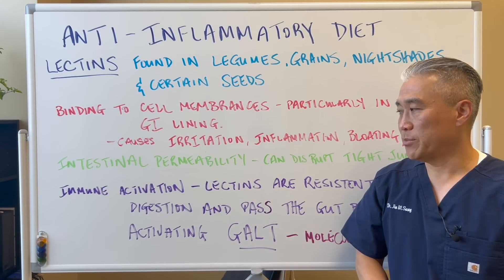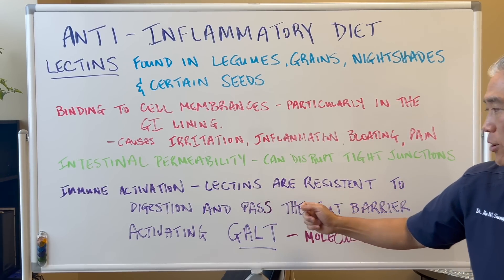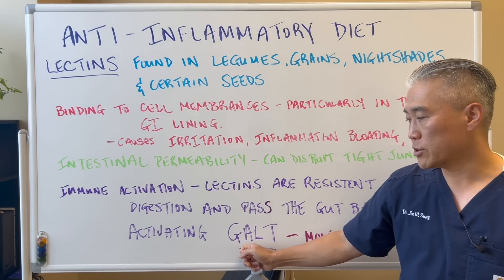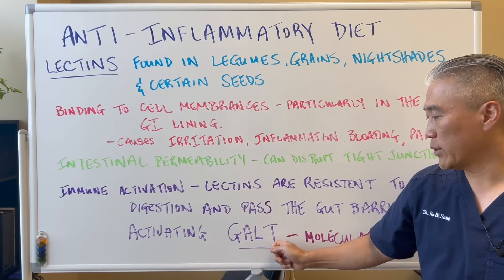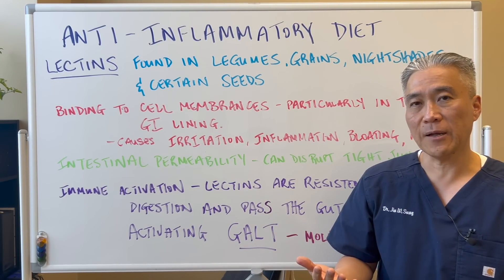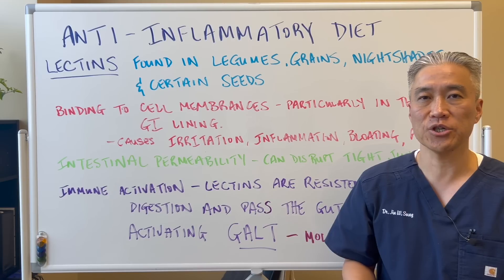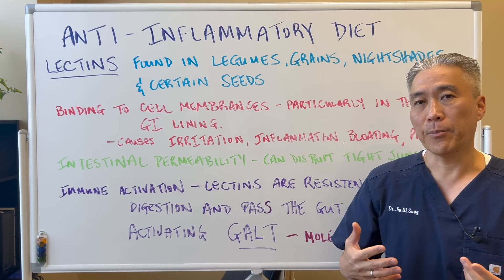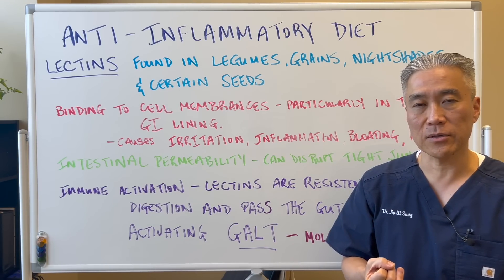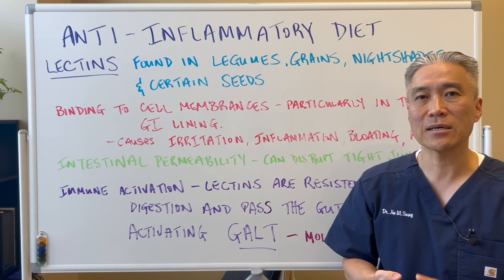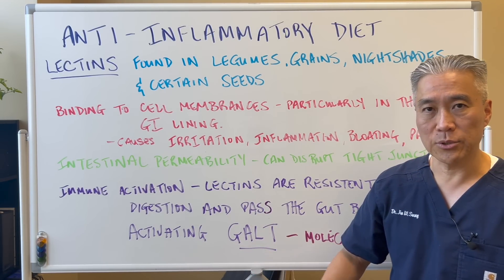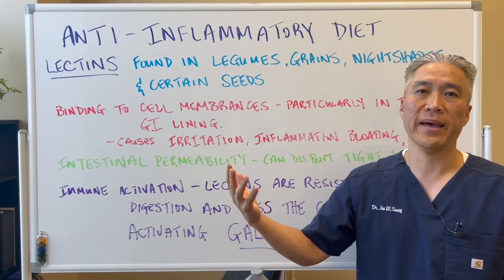Lectins also activate the immune system. They are resistant to digestion and can pass the gut barrier and activate GALT — gut-associated lymphoid tissue. When you activate the inflammatory process of the gut, eventually it leads to systemic inflammation and starts to impact the brain. Symptoms of brain inflammation can include cognitive difficulty, brain fog, or just not being clear on a daily basis. So impacting the GALT will eventually impact the brain.